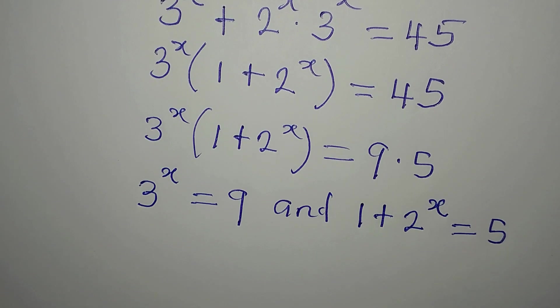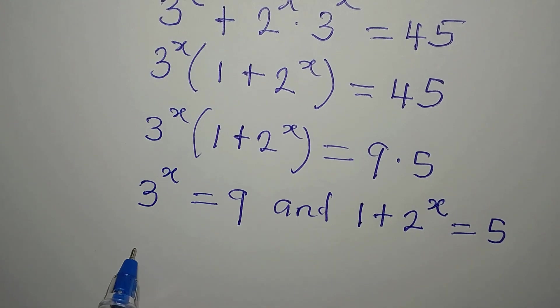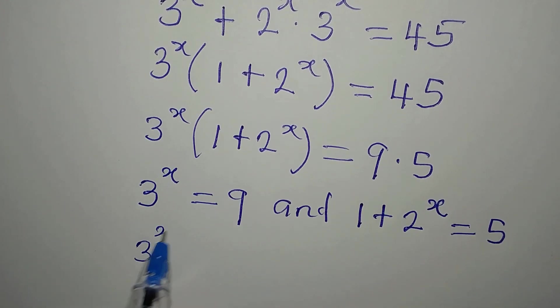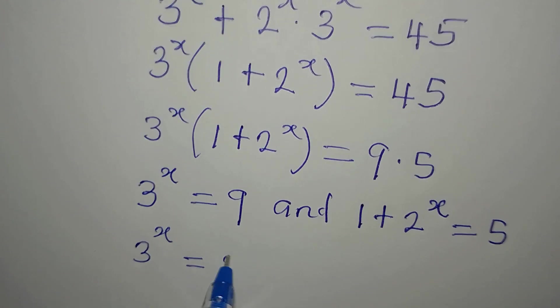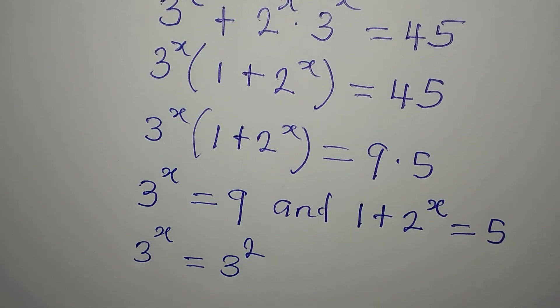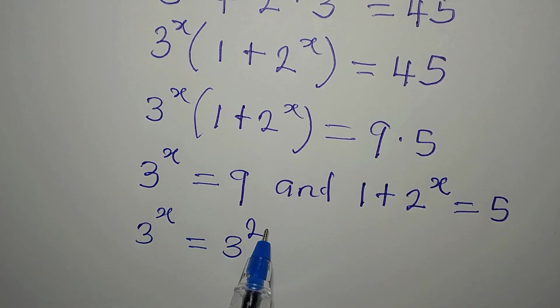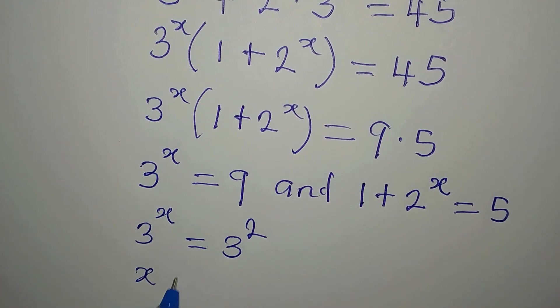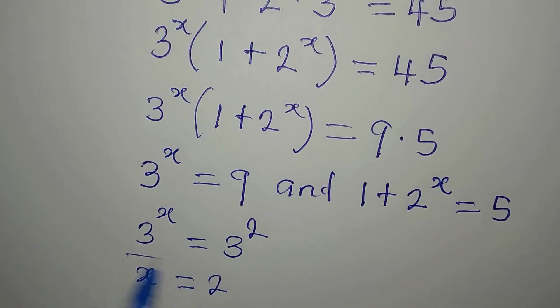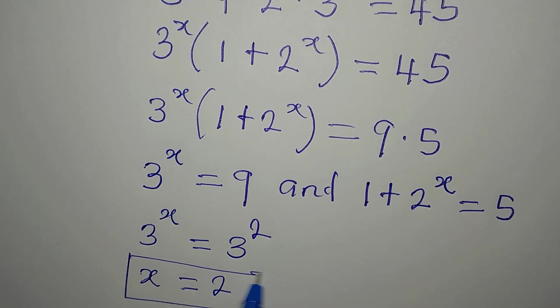Okay, so if this is the case, let's work on this. This means that our 3 to the power of x is equal to 3 to the power of 2. And from here, the bases are the same, so the powers must be equal. Our x is equal to 2 using the first comparison.